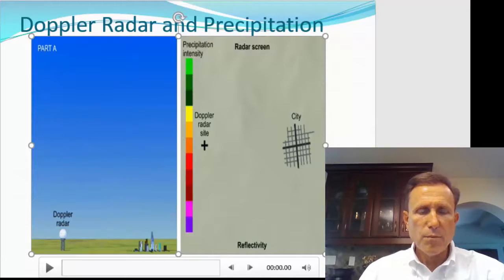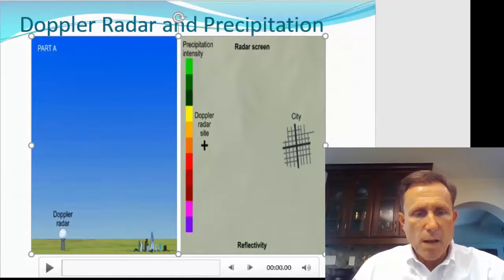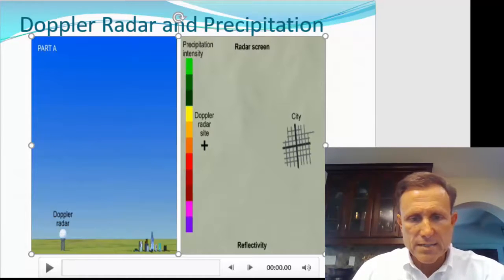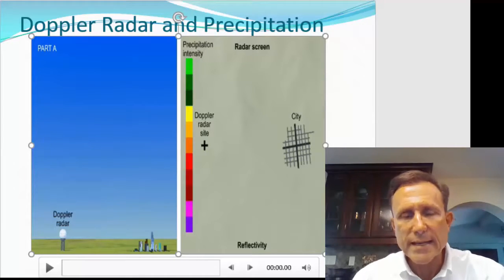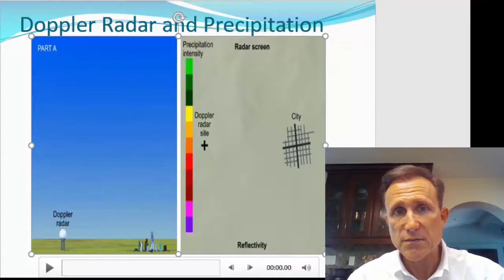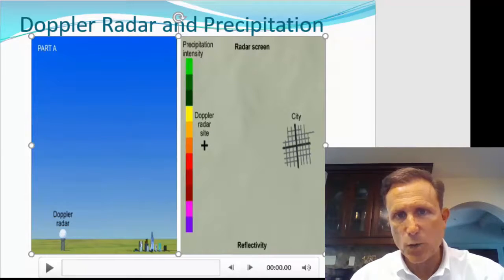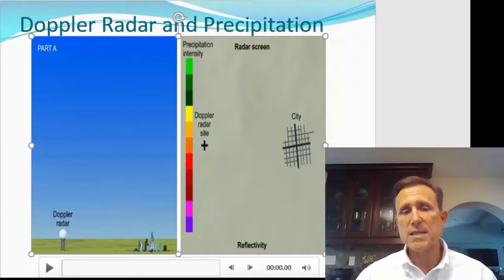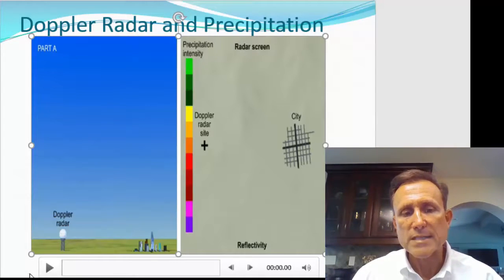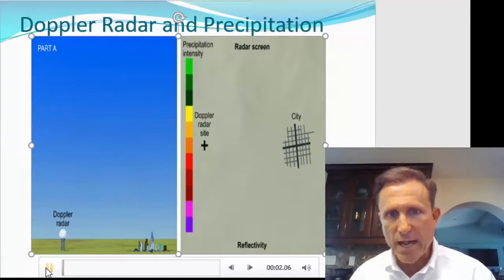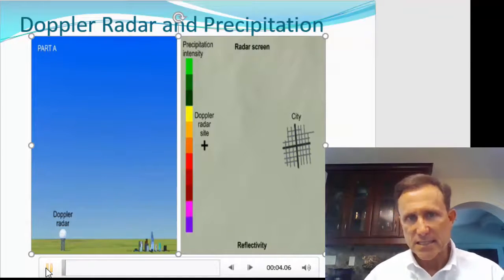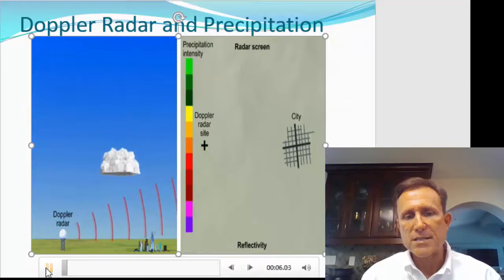So what you're looking at here, part A on the left, that is a Doppler radar tower some miles away from a city, blue skies there and the land. And then to the right is the actual imagery that you'll see from the Doppler radar. We're going to start out with what's known as reflectivity or precipitation intensity. This is when the Doppler radar is literally sending out a pulse of electromagnetic radiation and then listening for what bounces back.